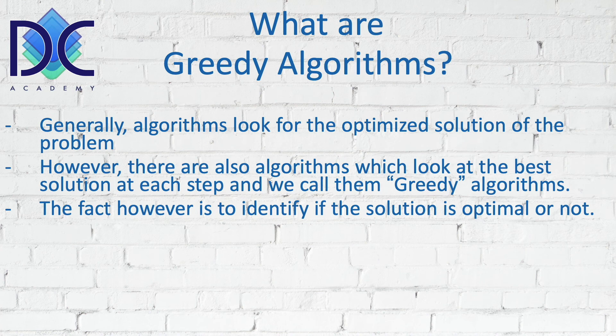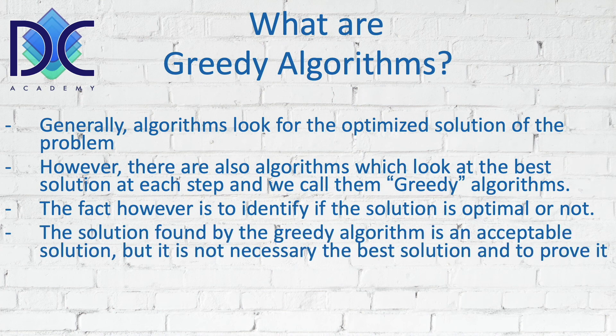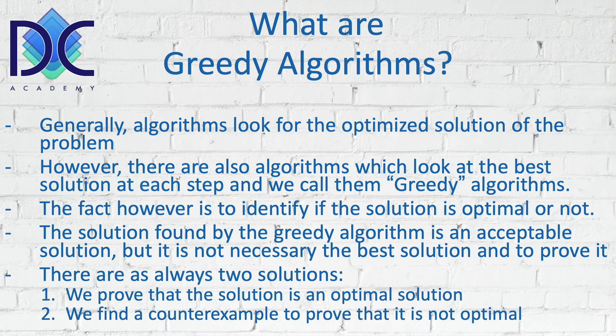The element that we don't know is whether the solution is optimal or not. We don't know if we have an optimal solution, but at least we have a solution which is acceptable. In some cases, this may be enough, because it's not always possible to find an optimal solution easily. The acceptable solution can be used — in some cases it can be a very good replacement of the optimal solution. We can try to find if the solution is optimal, or we can find a counter-example to prove that the greedy algorithm is not optimal.